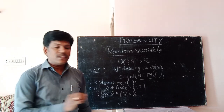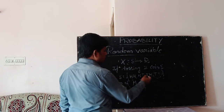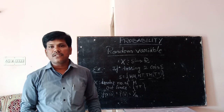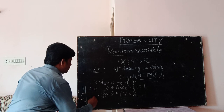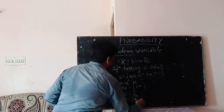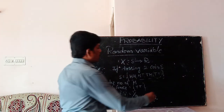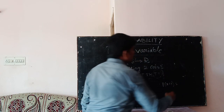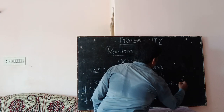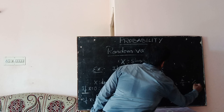By the definition of probability, which is the number of favorable cases divided by the total number of cases, we have P of zero equals one by four, since the number of favorable cases is one and total cases is four. If we take X equals one, the outcomes are head-tail and tail-head, so the number of possible cases is two. Therefore, P of X equals one is two by four, which equals one by two.